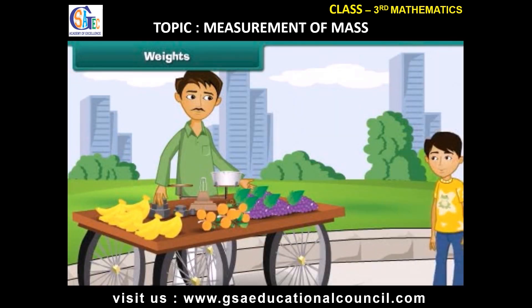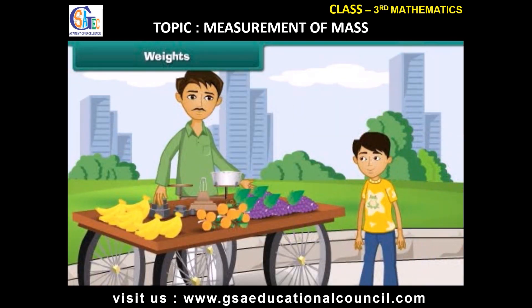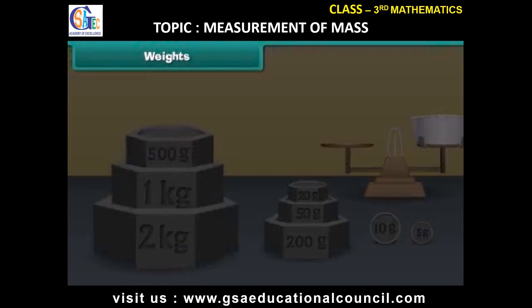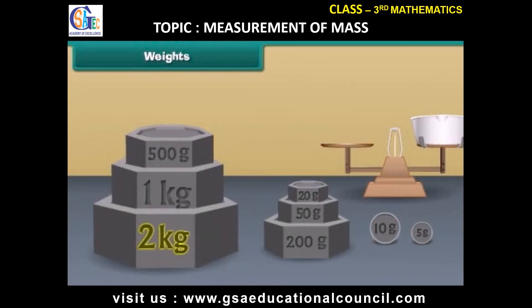When we go to a fruit seller, he uses different types of weights to balance the required amount of objects. Some standard weights used to measure weight are 2 kg, 1 kg, 500 grams, 200 grams, 50 grams, 20 grams, 10 grams, and 5 grams.